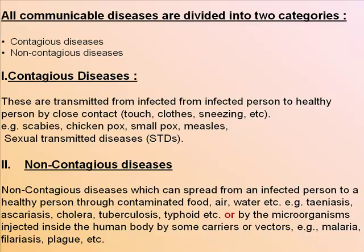All communicable diseases are divided into two categories: contagious diseases and non-contagious diseases. Contagious diseases are transmitted from an infected person to a healthy person by close contact — that is, touch, clothes, sneezing, etc. Examples include scabies, chickenpox, smallpox, measles, and sexually transmitted diseases (STDs).